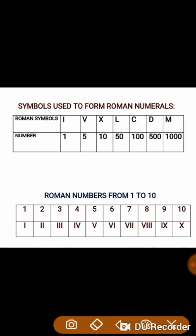The basic symbols are I, V, X, L, C, D, M. I represents 1, V represents 5, X represents 10, L represents 50, C represents 100, D represents 500, and M represents 1000. These basic symbols can help us to form all the numbers from 1 to infinity.